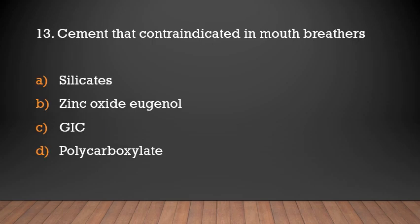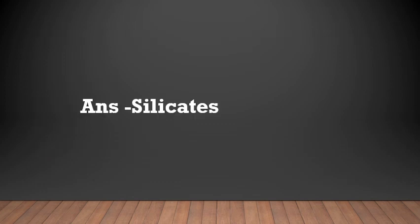Cement that is contraindicated in children: (a) silicates, (b) zinc oxide eugenol, (c) GIC, (d) polycarboxylate. Answer: Silicates. Silicate cement is contraindicated in children.